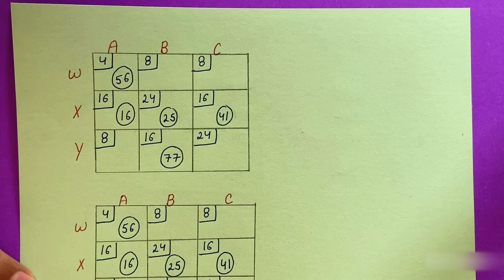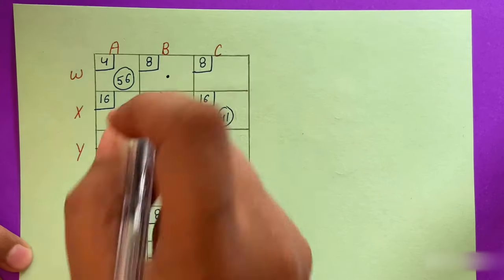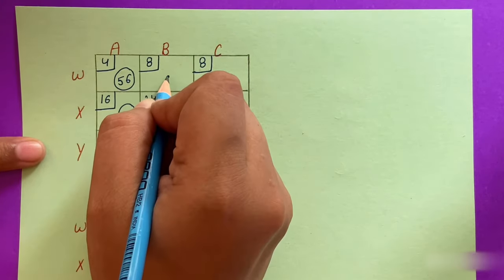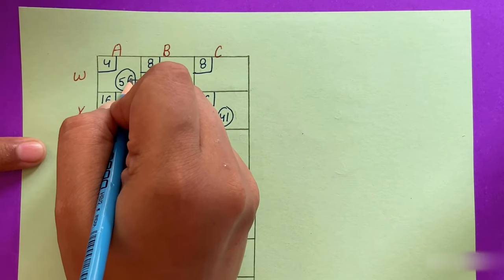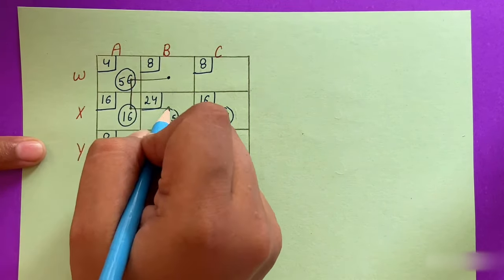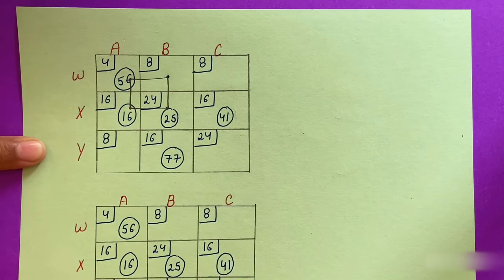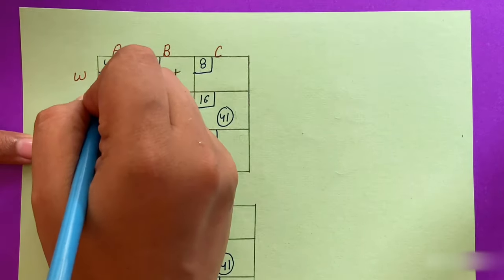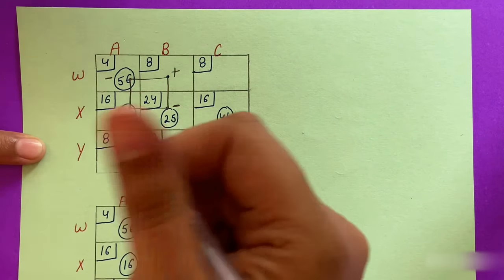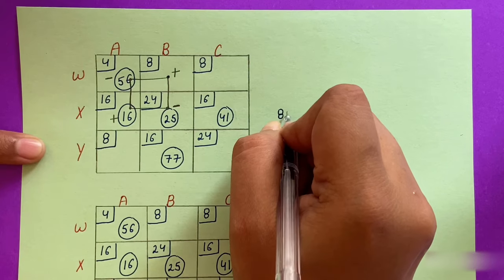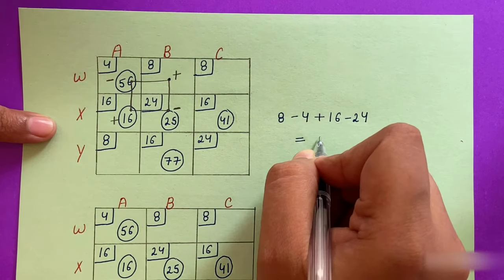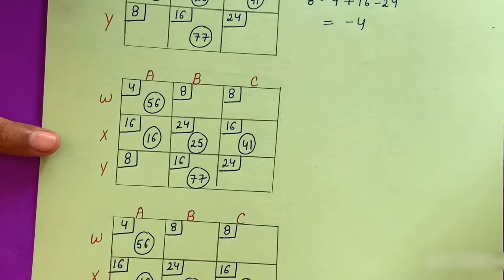We must keep finding improvement indices until all values are positive or zero. For the WB cell in the new matrix, tracing the closed loop and assigning plus-minus signs: improvement index = 8 − 4 + 16 − 24 = −4.